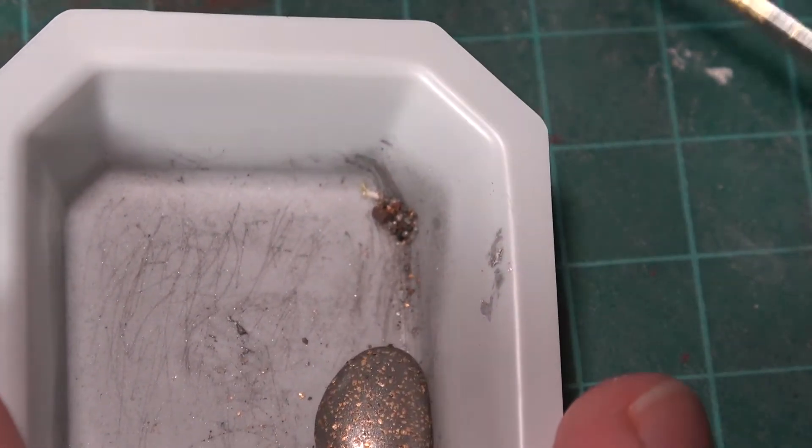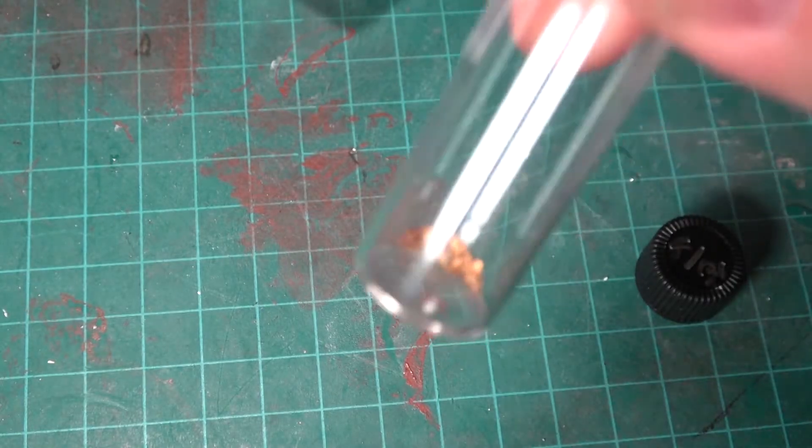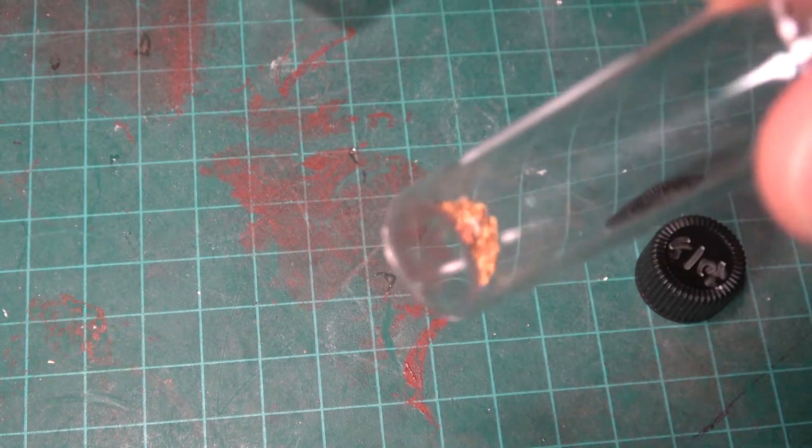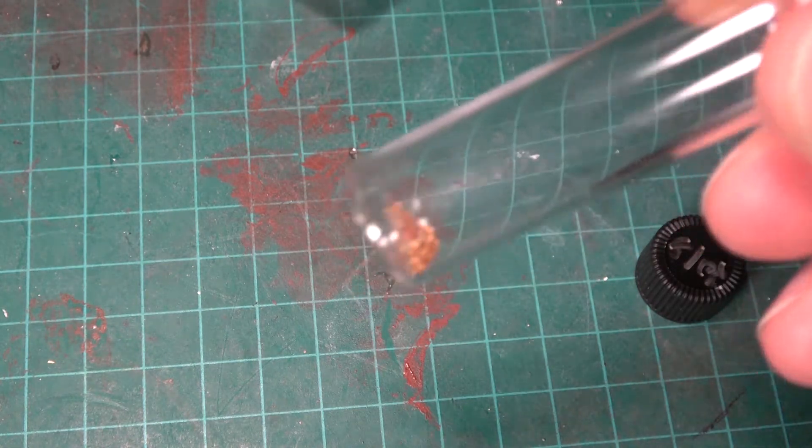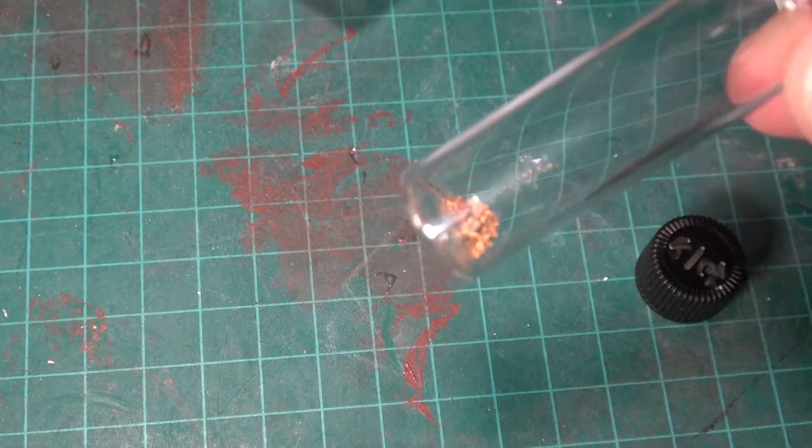Okay I found this works out a lot better if you just put the gold into a little vial and then put the bead in there and then shake it around and agitate it. It seems to dissolve it a lot quicker so let's do that.